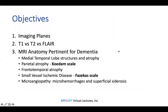The objectives for tonight are imaging planes, T1 versus T2 versus FLAIR, and MRI anatomy pertinent for dementia. We'll learn to recognize medial temporal lobe structures and atrophy, parietal atrophy, frontal temporal atrophy, small vessel ischemic disease, and microangiopathy.